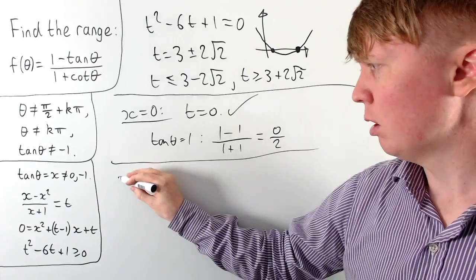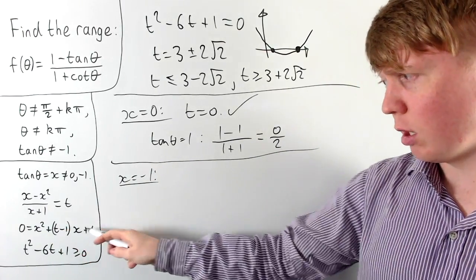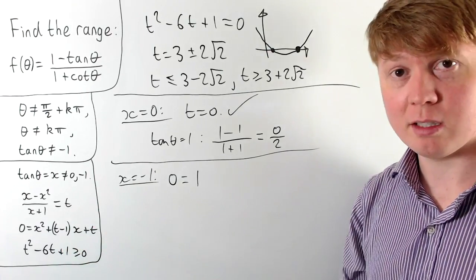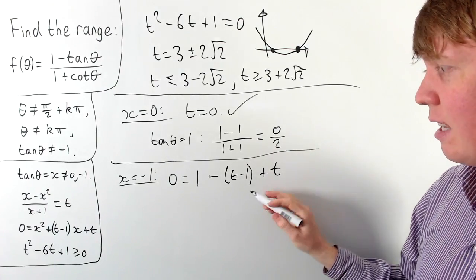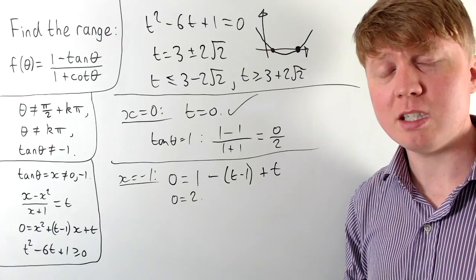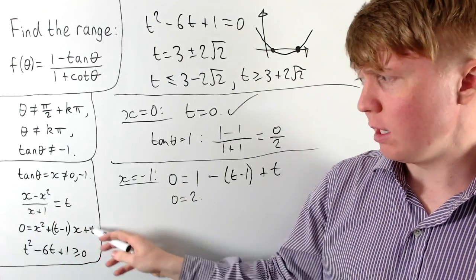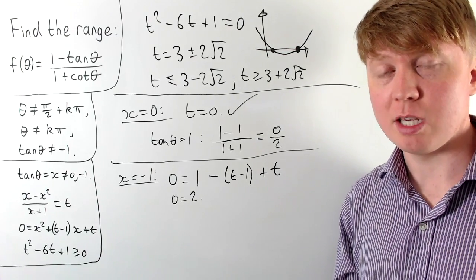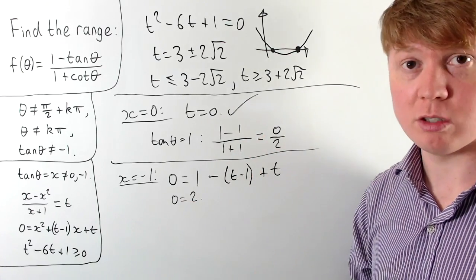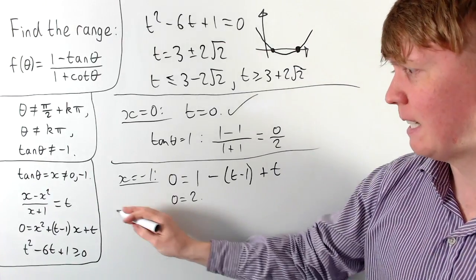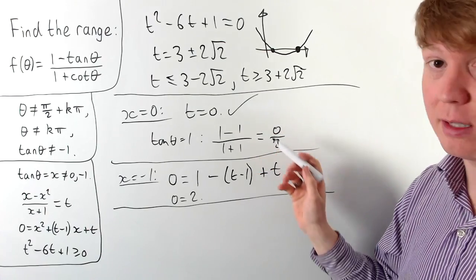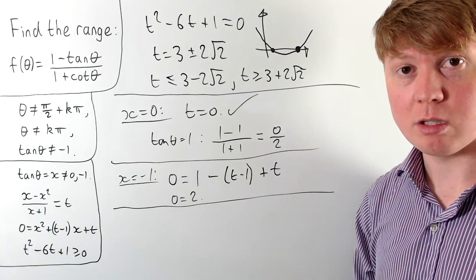Now what about when x equals -1? If we substitute x = -1 into the quadratic x² + (t-1)x + t = 0, we get 1 - (t-1) + t = 0, which gives 1 + 1 - t + t = 0, or 0 = 2 — a contradiction. So x = -1 can never be a solution to this quadratic for any value of t. This means x = -1 doesn't give rise to any values in our range and doesn't cause us any problems at all.